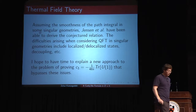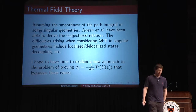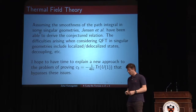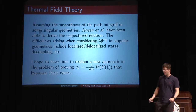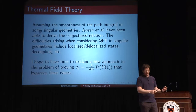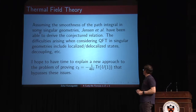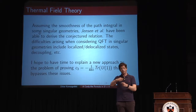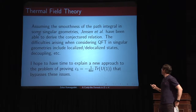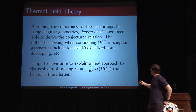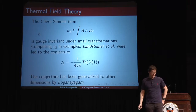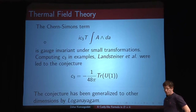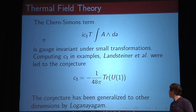In the non-perturbative regime, the challenge is much more formidable. There have been arguments in the literature by Jensen, Logan, Agam, and Yarom, placing thermal field theory in backgrounds with conical deficit and arguing decoupling of states. At the end of this talk, I'll show a non-perturbative proof that does not involve singular geometries — very similar in spirit to results Cardy derived in two dimensions by modular transformations, exchanging circles. So you should consider this result established: C3 is minus 1/(48π) times the U(1) gravitational anomaly.